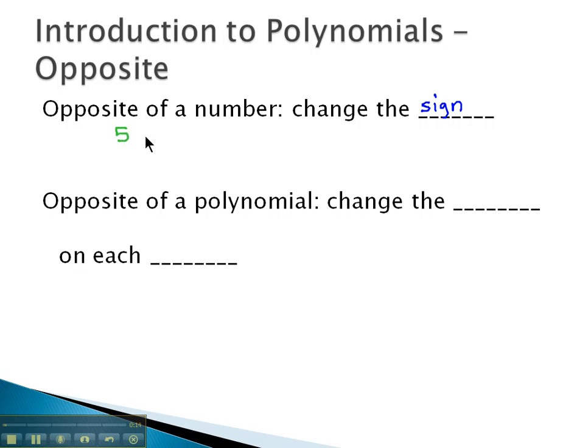For example, if we wanted the opposite of 5, it would be negative 5, changing the positive to a negative. Or if we wanted the opposite of negative 7, we would change that negative sign to a positive 7. So the opposite of a number simply changes the sign on the number.